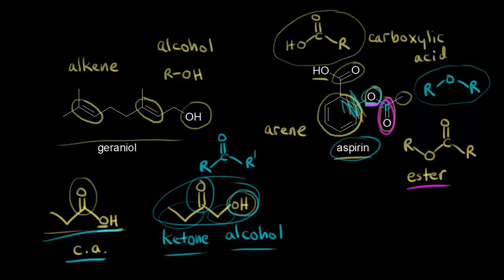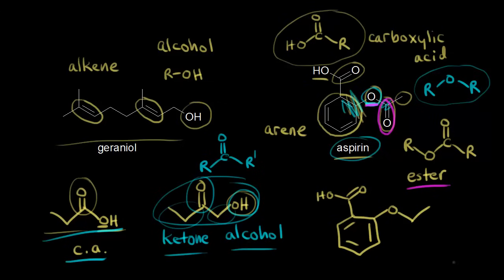How could we turn that ester into an ether? If I redraw the molecule with the ring and the carboxylic acid, but then draw in the oxygen without the carbonyl, now we do have an ether. We have an oxygen with an R group on one side and the rest of the molecule on the other side. Look for the carbonyl right next to the oxygen — that makes it an ester.